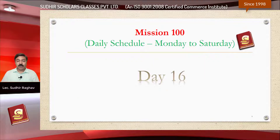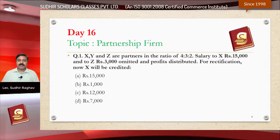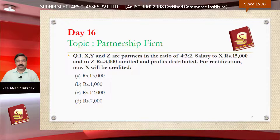Now we start Day 16. Day 16 ka first question aapki screen par hai: X, Y, Z are partners in the ratio of 4:3:2. Salary to X rupees 15,000 and to Z rupees 3000 was omitted and profit distributed. For rectification, X will be credited — option A rupees 15,000, option B rupees 1000, option C rupees 12,000, or option D rupees 7000.